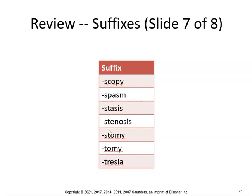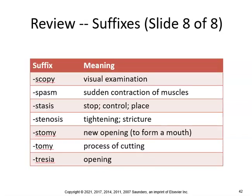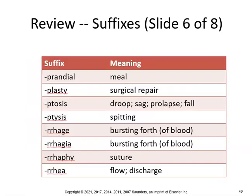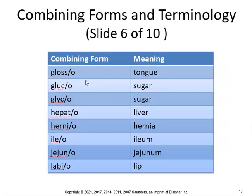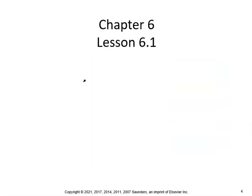Final suffix review: scopy is visual examination. Spasm is sudden contraction of the muscles. Stasis means stop. Stenosis means tightening or narrowing. Ostomy means new opening. Tomy is the process of cutting. And atresia means the opening is closed. A lot of these are a repeat — this is just more review. Just make flashcards and quiz each other. Good luck.